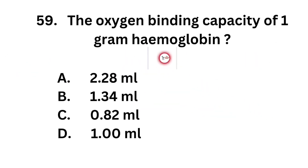Question number 59. The oxygen binding capacity of 1 gram of hemoglobin. Option A: 2.28 ml. Option B: 1.34 ml. Option C: 0.82 ml. Option D: 1 ml.